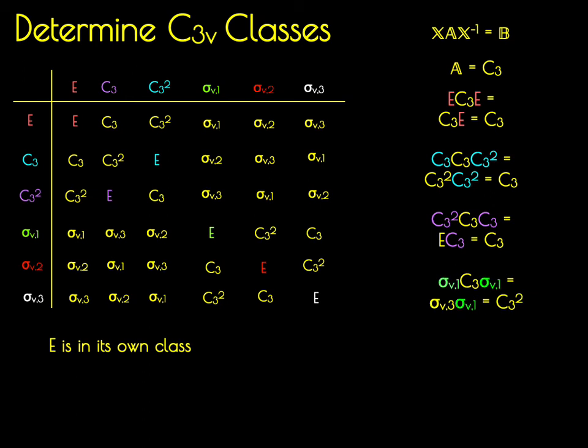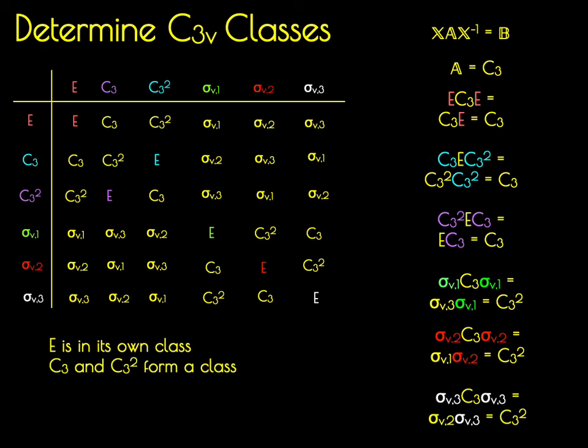As we move on to our mirror planes, we find that the similarity transform of C3 by sigma V1 is equal to C3 squared. So C3 squared is a conjugate of C3. The same applies for sigma V2 and for sigma V3.